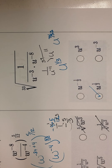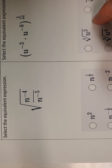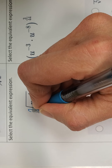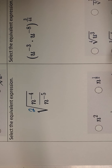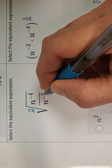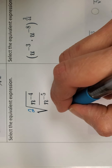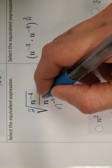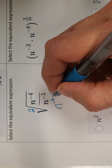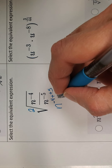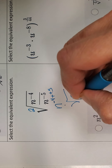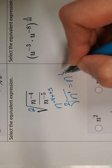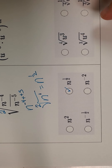So I'm looking for which option says u to the 1 third — that one. Let's try another one; these have a lot going on so go slow. There's no index, so I'll note it's a 2 — it's a square root. Simplifying the fraction inside using the quotient rule: n to the negative 4 minus a negative 5. Subtracting a negative becomes positive, which gives me just n. The square root of n is n to the 1 half — power is 1, index is 2. So n to the 1 half is the answer.